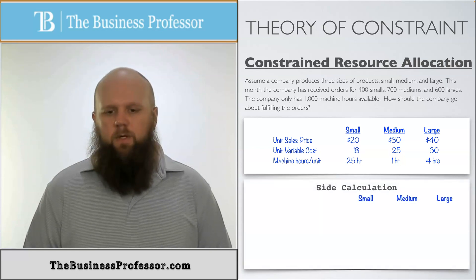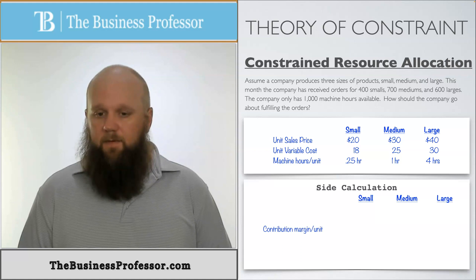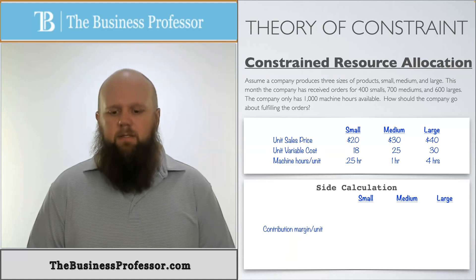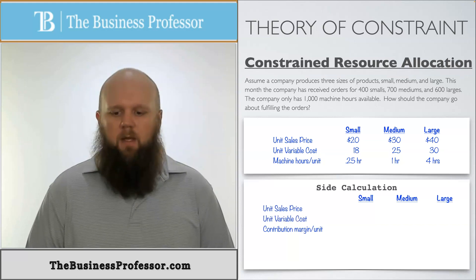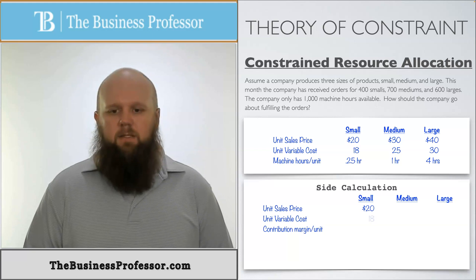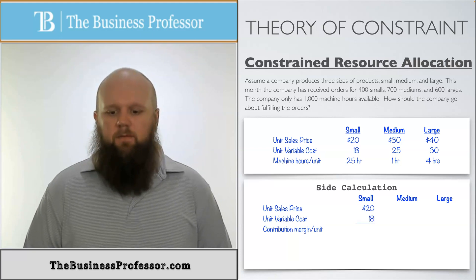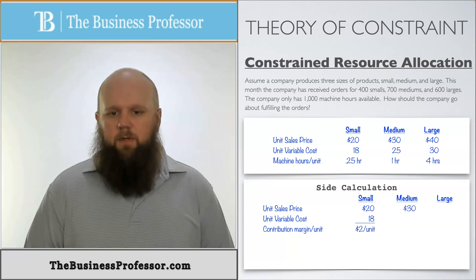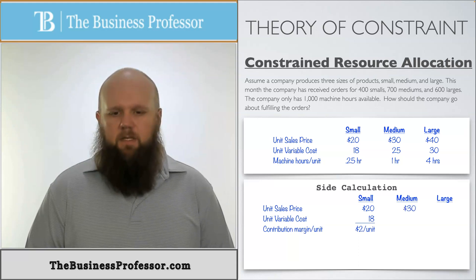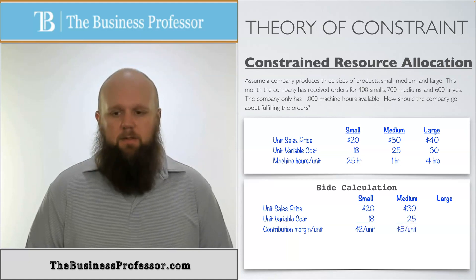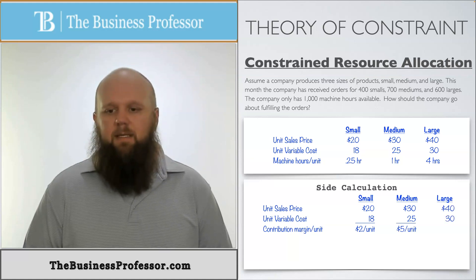So first and foremost, we're going to look at the contribution margin per unit. That's the first thing we need to calculate. So we know the contribution margin per unit is the unit sales price minus the unit variable cost. So for small, the unit sales price is $20, the unit variable cost is $18. So that's going to give us a contribution margin of $2 per unit. Medium is the same. It's going to be $30 per unit for the sales price, unit variable cost is going to be $25. And that's going to give us a contribution margin per unit of $5. And then large is going to be $40 minus the $30, which is going to give us a contribution margin of $10.